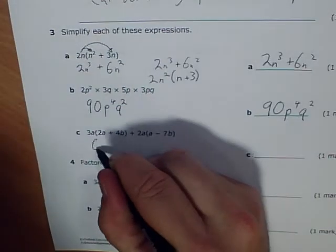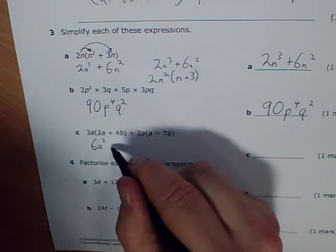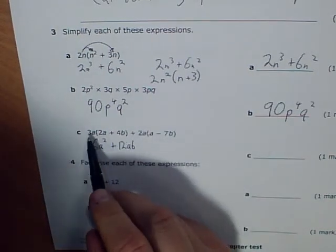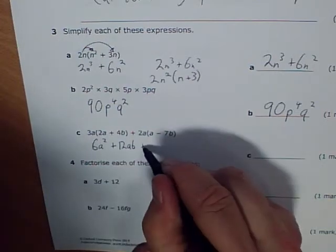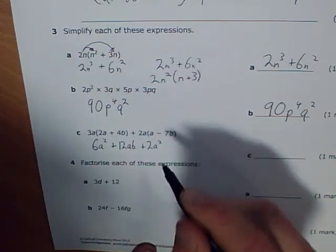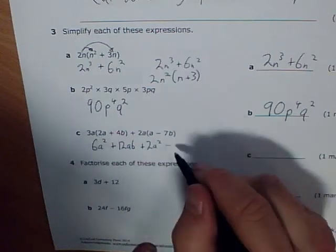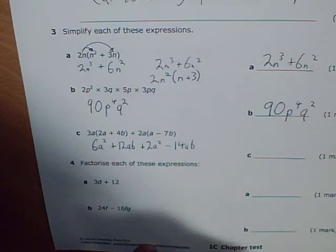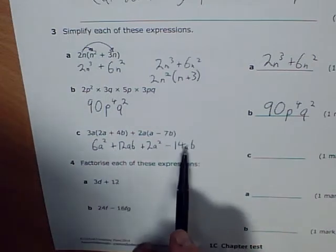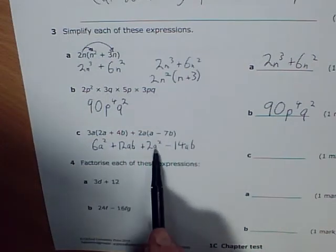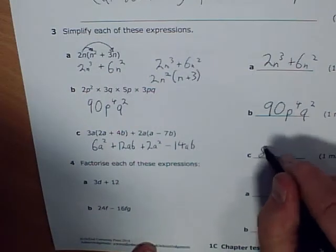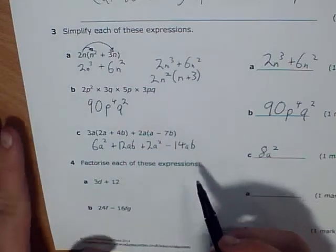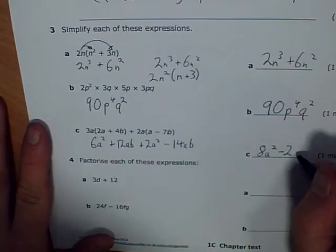3a times 2a gives me 6a squared. 4b times 3a gives me 12ab. Plus 2a squared, take away 2a times 7b, so minus 14ab. Now to simplify this, I need to look for like terms. I've got a squareds, which are like terms, and I've got abs. So I've got 8 lots of a squared. I've got 12ab take away 14ab, so that's a total of minus 2 lots of ab.